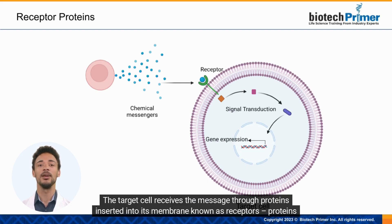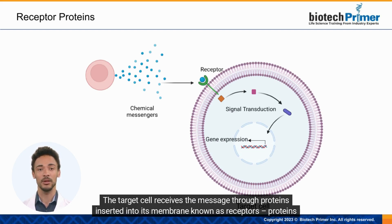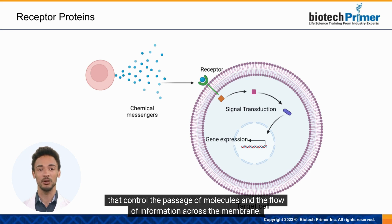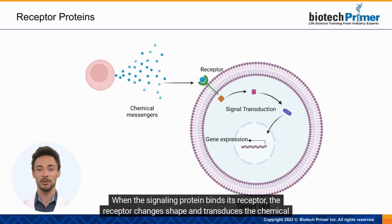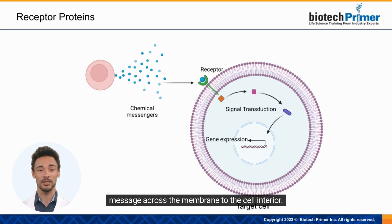The target cell receives the message through proteins inserted into its membrane, known as receptors — proteins that control the passage of molecules and the flow of information across the membrane. When the signaling protein binds its receptor, the receptor changes shape and transduces the chemical message across the membrane to the cell interior.